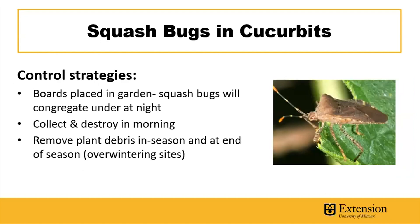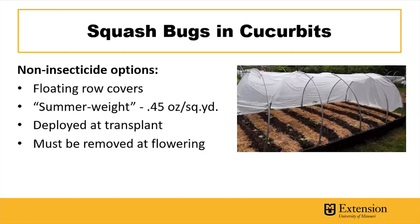Squash bugs like to hide in the evening, so placing boards or newspaper in the garden can lure them to an area where they'll congregate. In the morning you can collect and destroy them. Keeping excess plant debris out of the garden reduces hiding areas, and cleaning up at the end of the season can help reduce overwintering sites, although they are capable of moving out of the garden and overwintering elsewhere in the home landscape.